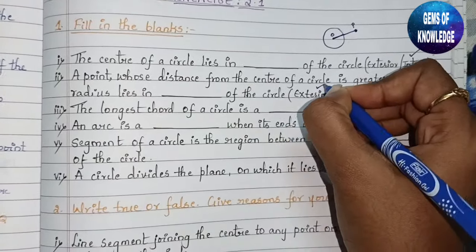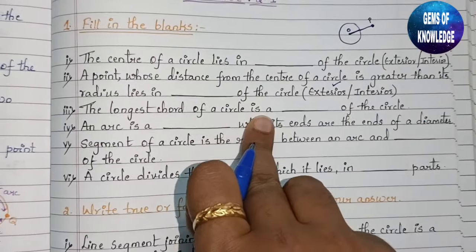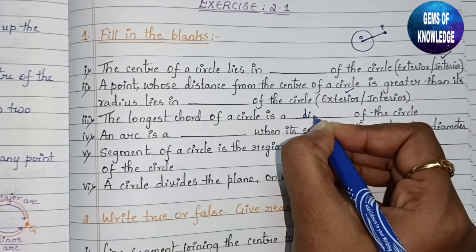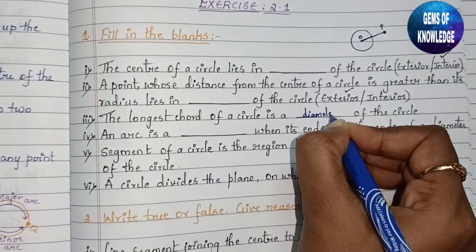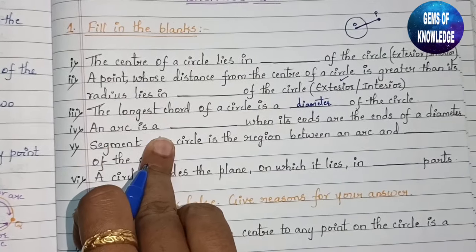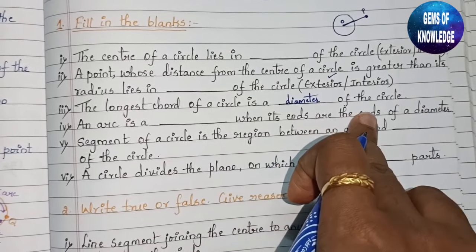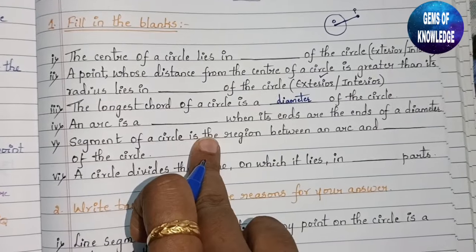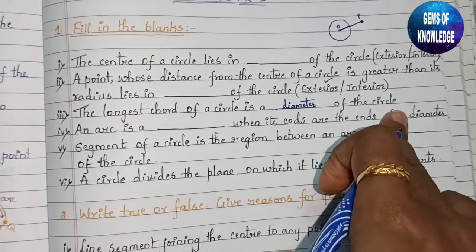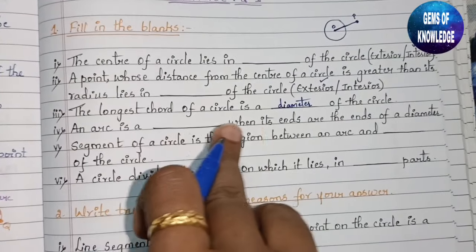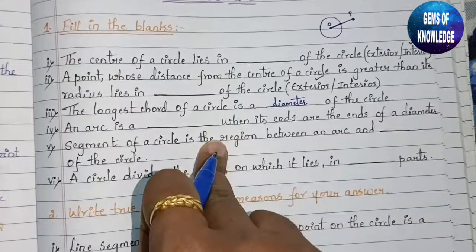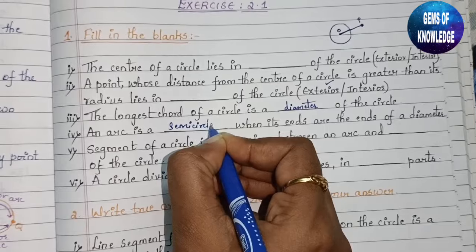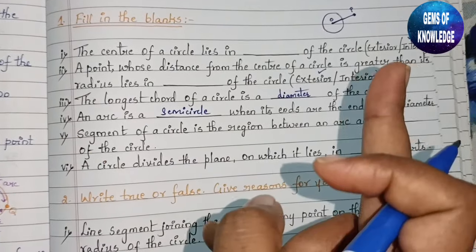The longest chord of a circle is the diameter. Next: an arc is a dash when its ends are the ends of a diameter. The arc is a semicircle when its ends are the ends of the diameter, because the circle is then divided into exactly half.